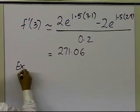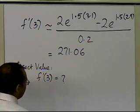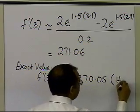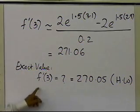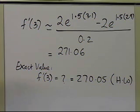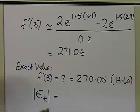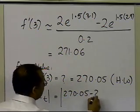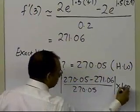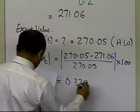So that's the value we get for f'(3). The exact value — which you can find using differential calculus — turns out to be 270.05. So the absolute relative true error is |270.05 − 271.06| / 270.05 × 100, and this number turns out to be 0.375 percent.